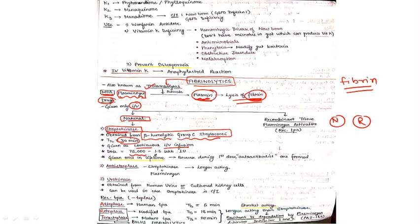The dose is 75,000 to 1.5 lakh international units, given only once in a lifetime because during the first dose autoantibodies are formed. When you give the second dose, there will be no effect of this drug because autoantibodies will destroy that particular drug.